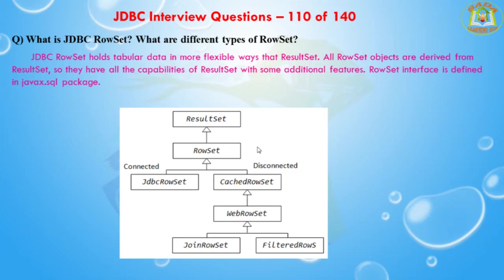RowSets are broadly divided into two types: connected RowSets and disconnected RowSets. Connected RowSet objects are connected to a database and are most similar to ResultSet objects. The JDBC API provides only one connected RowSet object: javax.sql.rowset.JdbcRowSet, and its standard implementation class is com.sun.rowset.JdbcRowSetImpl.